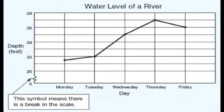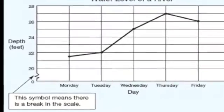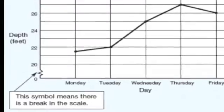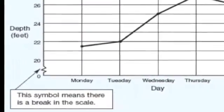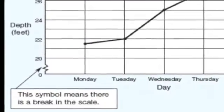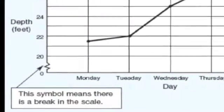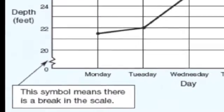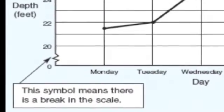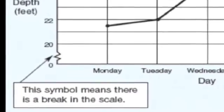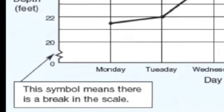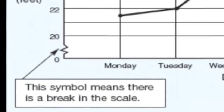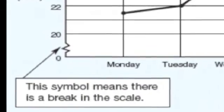There's a symbol on the axis that means there's a break in your axis. The scale is in twos, but from 0 to 20 is a 20-unit jump instead of twos. It's just a way to show that there is a break in the graphing there.